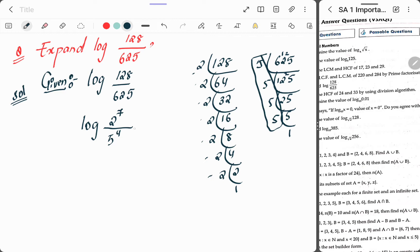As per the log rule, division changes into subtraction. So on the next step: log 2 to the power of 7 minus log 5 to the power of 4. When there's a power, bring the power before the log: 7 log 2 minus 4 log 5.